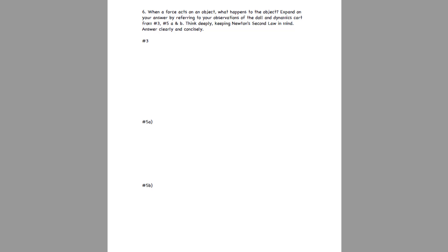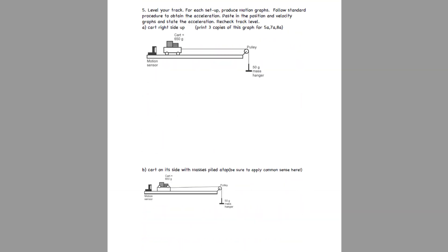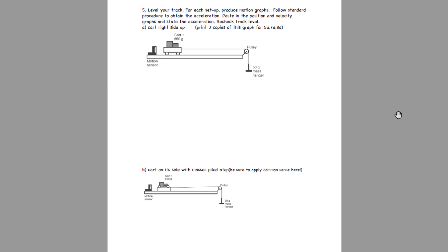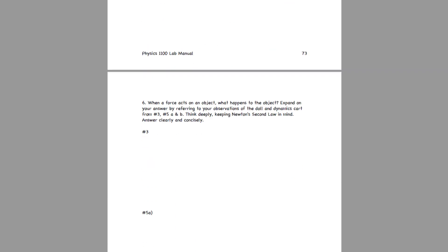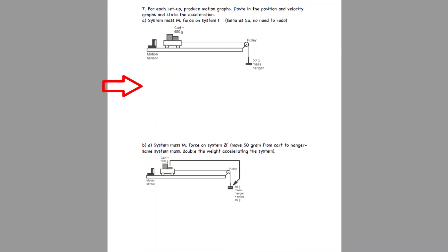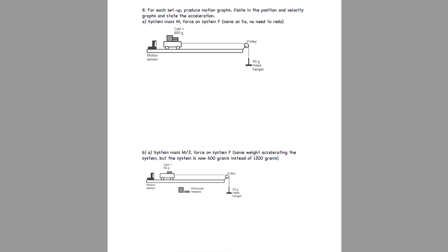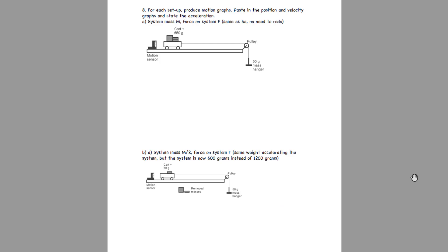Now I want to talk about question 6, but first let me revisit question 5. Question 5 is the case where you had the cart right side up and it accelerated down the track due to the mass hanger. You need three copies of this graph in your lab report: the first goes in question 5a, the second goes in question 7a, and the third goes in question 8a. In all three cases you've always got a second graph and you're going to compare the two graphs to each other.